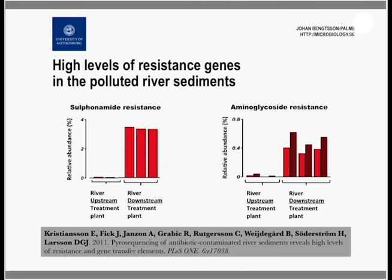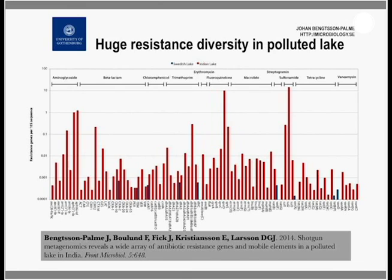However, that study used a relatively old sequencing technique. So instead, we used a more modern sequencing technology to sequence the DNA from one of these polluted Indian lakes, comparing those findings to a Swedish lake as a non-polluted reference. The results from the Indian lake showed much, much higher abundances of resistance genes compared to the Swedish lake — approximately 7,000 times more resistance genes in the Indian lake. The Swedish lake represents background levels — what you would normally find anywhere.